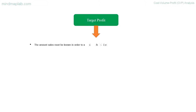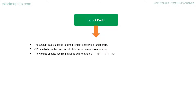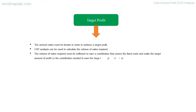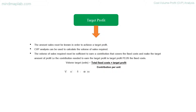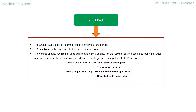Target profit: CVP analysis can be used to calculate the volume of sales required to achieve a target profit. The volume of sales must be sufficient to earn a contribution that covers fixed costs and makes the target amount of profit. The contribution needed equals target profit plus fixed costs. Volume target in units equals total fixed costs plus target profit divided by contribution per unit. Volume target in revenue equals total fixed costs plus target profit divided by the CS ratio.